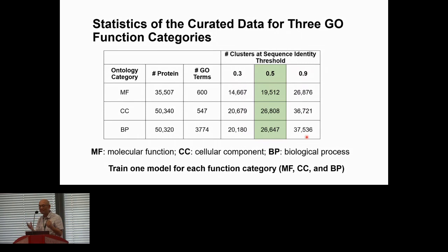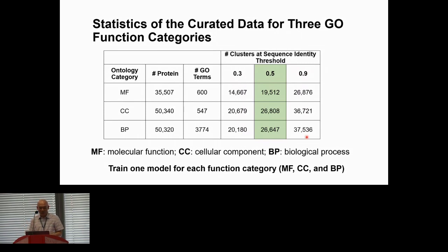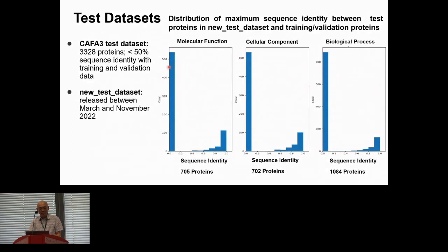We used two independent test datasets. The first is the CAFA3 test dataset with about 3,000 proteins having less than 50% sequence identity with the training data. The second is a new test dataset of approximately 1,000 proteins collected from UniProt releases after the training data cutoff. The sequence identity distribution shows most new test proteins have very low sequence identity — less than 10% — with the training dataset, though some have higher identity.